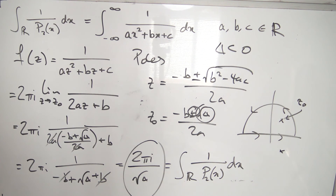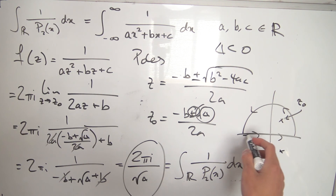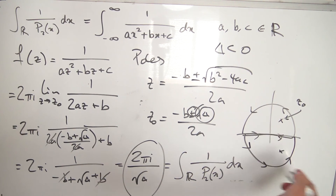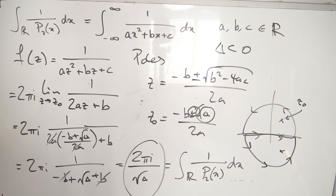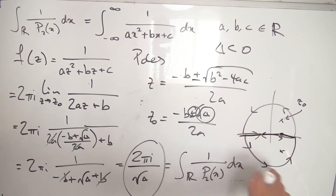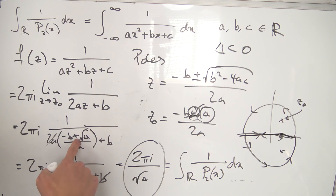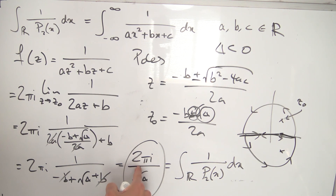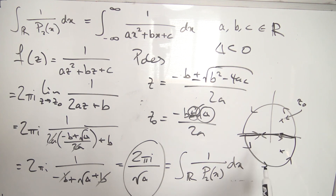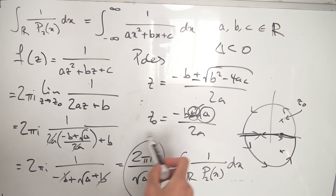One more thing: it doesn't matter whether you choose the upper or lower semicircular contour. If you choose the lower half, you traverse the real axis in the opposite direction, and you also take the negative square root for z₀. This introduces an extra negative sign, but since the integral is then from r to −r rather than −r to r, flipping the orientation multiplies by another negative, and you end up with the same final result.